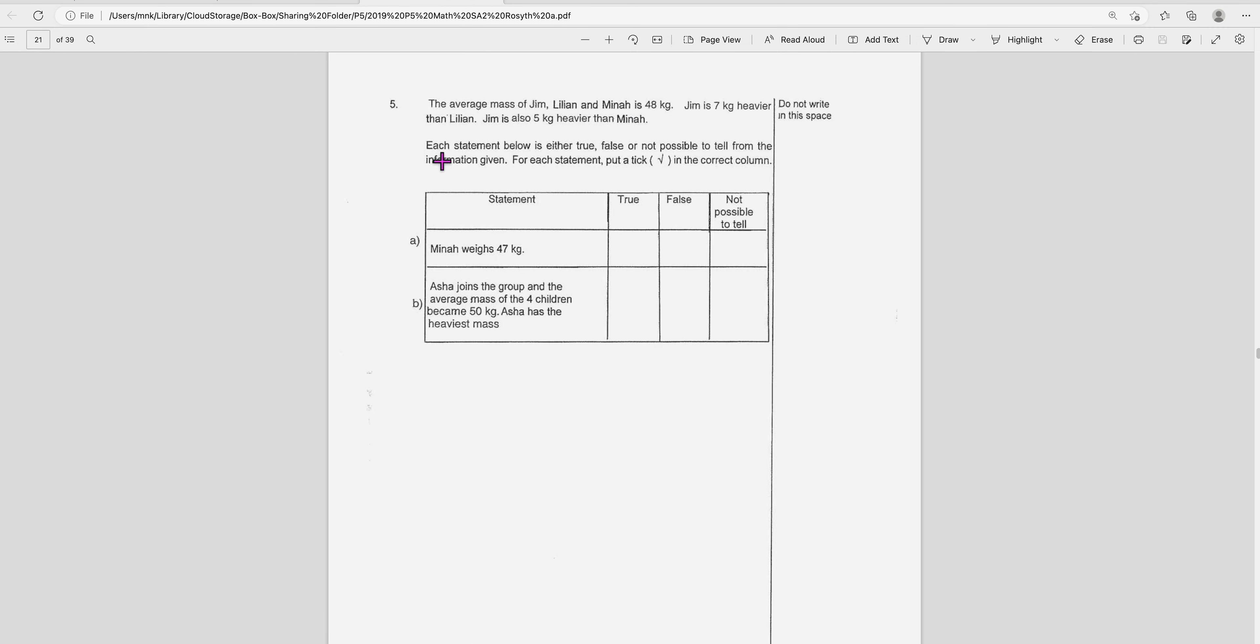So the average for Jim, Lillian, and Mina is 48. If the average is 48, the total will be 48 times 3, which gives you a total of 144. Because you have the three of them, so 48 times 3 is 144, correct?